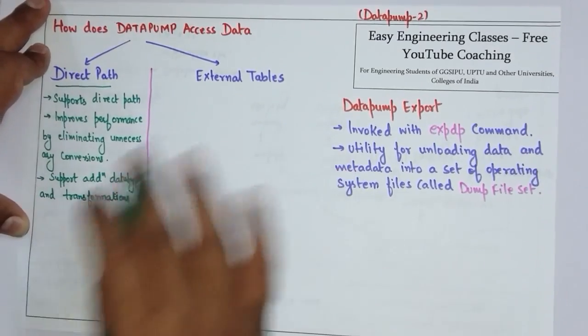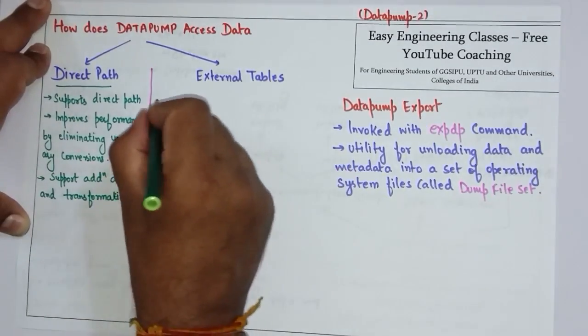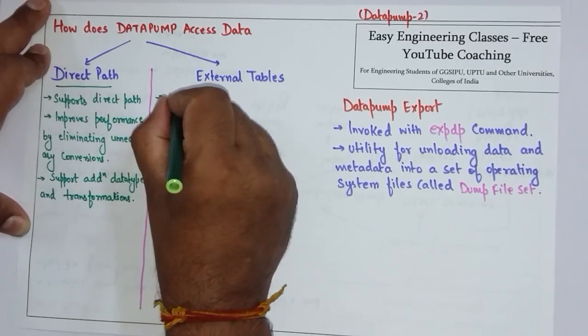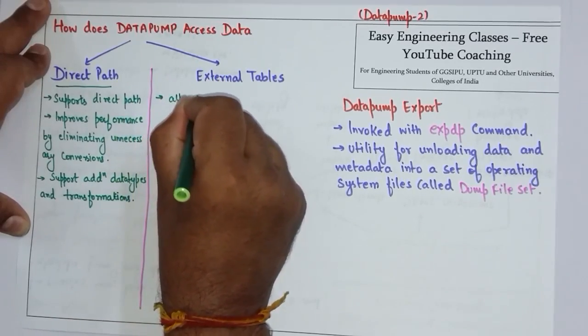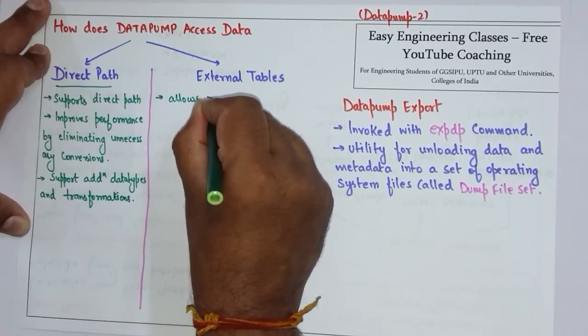The second type of data access is by the use of External Tables. External Tables allow reading of data from a source external to the database.